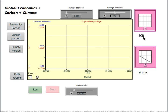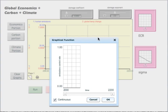This is the emissions control rate. And if we click on that, we see this graphical function.